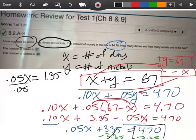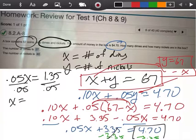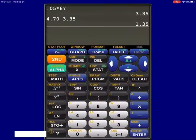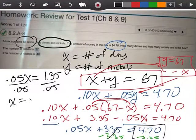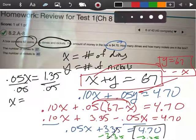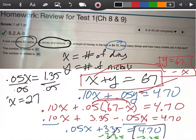And then my last step is to divide by 0.05. So let's do that one more time. Divided by 0.05, 27. So x is 27.